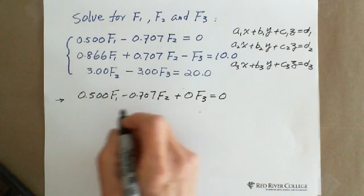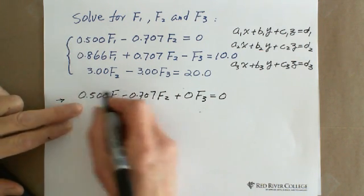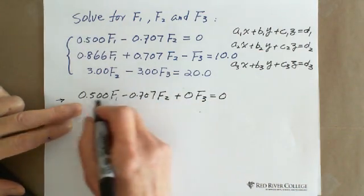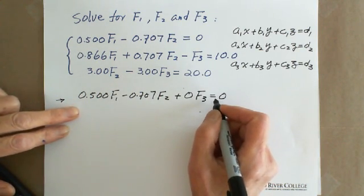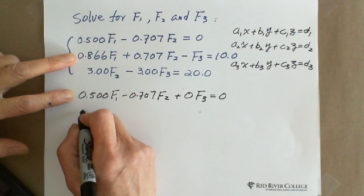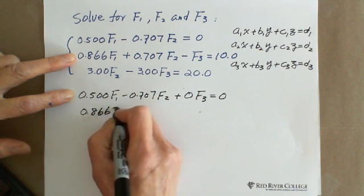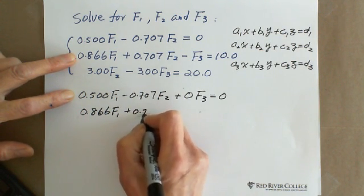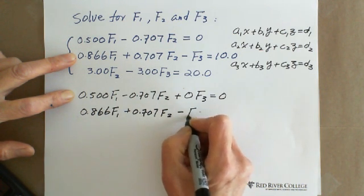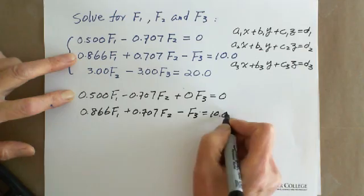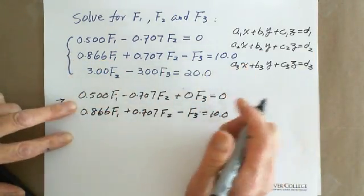From this one, you can see the A1, B1, C1, D1. And the second equation, we can write 0.866F1 plus 0.707F2 minus F3 equals 10.0. The second equation has everything: F1, F2, F3 and the constant.